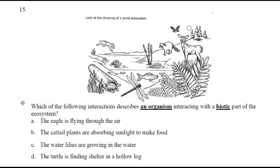Which of the following interactions describes an organism interacting with a biotic part of the ecosystem? A) The eagle is flying through the air. B) The cattail plants are absorbing sunlight to make food. C) The water lilies are growing in the water. D) The turtle is finding shelter in a hollow log.